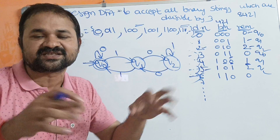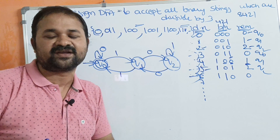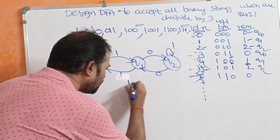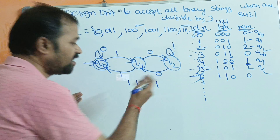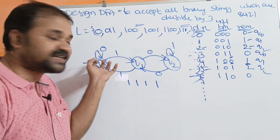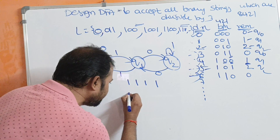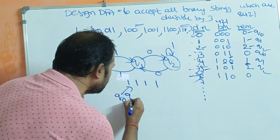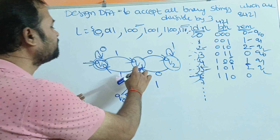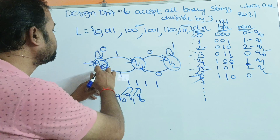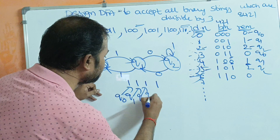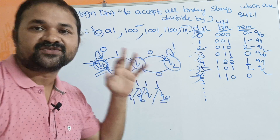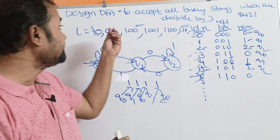Now let us verify the DFA by taking input string 15, which is all 1s (1111). Starting at Q0: Q0 on 1 goes to Q1; Q1 on 1 goes to Q0; Q0 on 1 goes to Q1; Q1 on 1 goes to Q0. We end at Q0, which is the final state. So we can conclude that our DFA is correct.